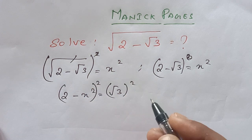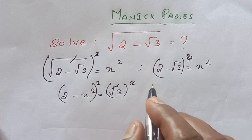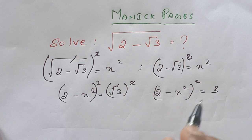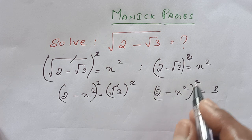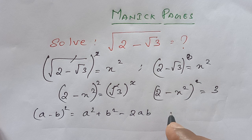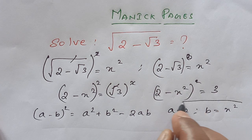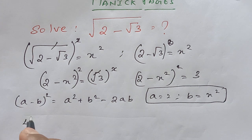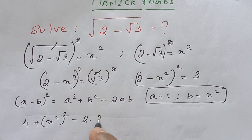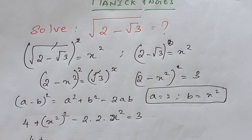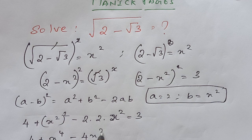On the right hand side, the square root and square will get cancelled. So this gives you: (2 minus x squared) squared is equal to 3. Now it is of the form (a minus b) squared. We know (a minus b) squared equals a squared plus b squared minus 2ab. Here a equals 2 and b equals x squared. Substituting gives: 4 plus x squared squared minus 2 times 2 times x squared equals 3, so 4 plus x to the power 4 minus 4x squared equals 3.